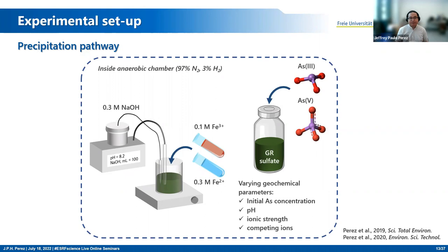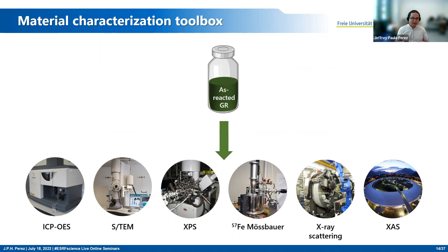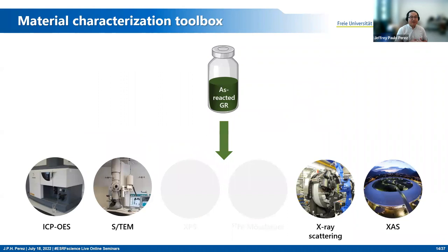In order to characterize the reacted solids, I use a variety of techniques. I use ICP-OES, or inductively coupled plasma optical emission spectrometry, to measure how much arsenic is removed from my system. Transmission electron microscopy to look at changes in the structure or morphology of my green rust. X-ray scattering to monitor changes in structure. And X-ray absorption spectroscopy to look at the local binding environment of arsenic.